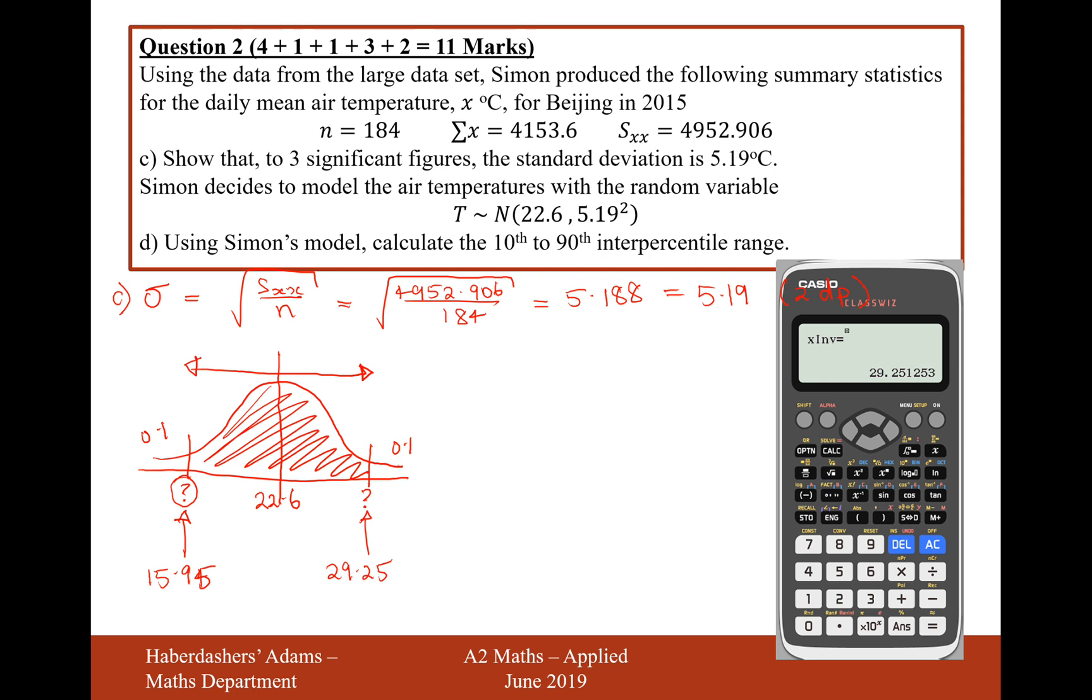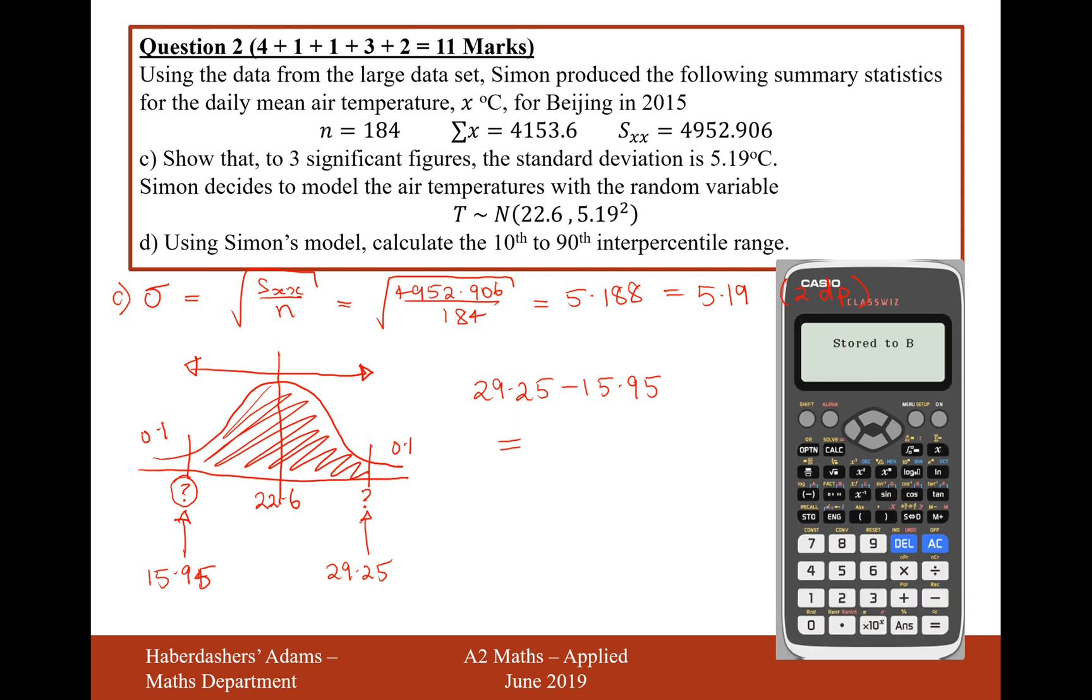And now to work out the interpercentile range we're going to be doing 29.25, make sure you write some of this down, minus 15.95. And that's going to give us an answer, we'll store that to calculator variable B.